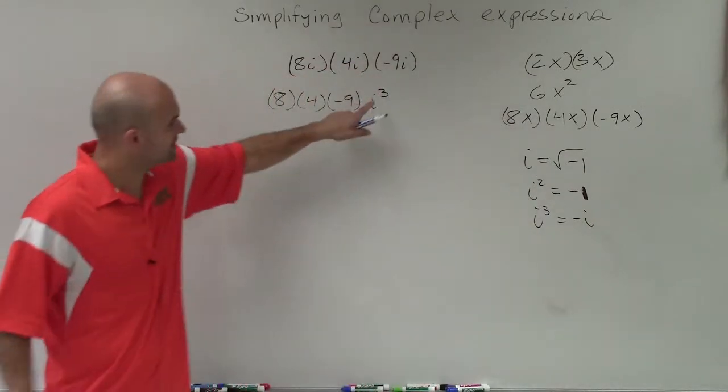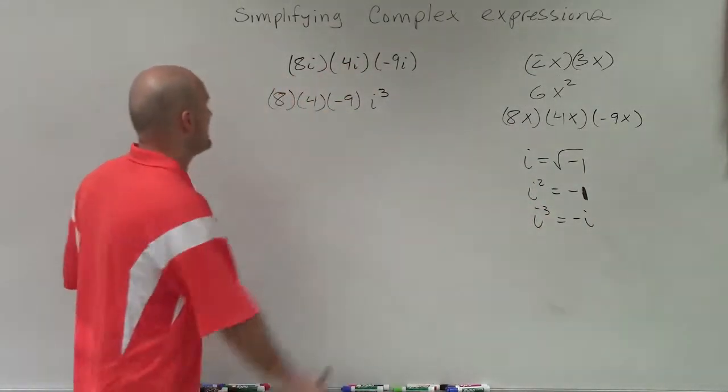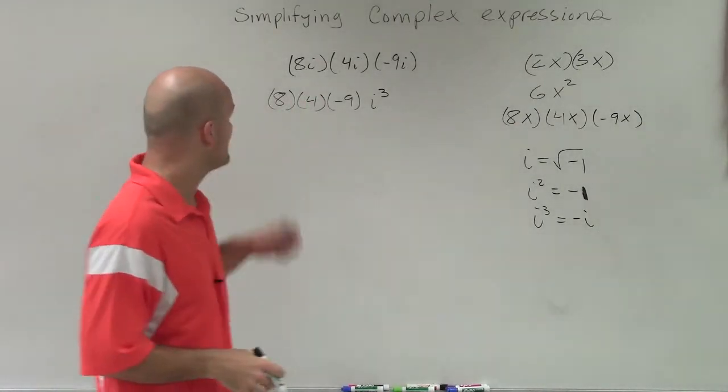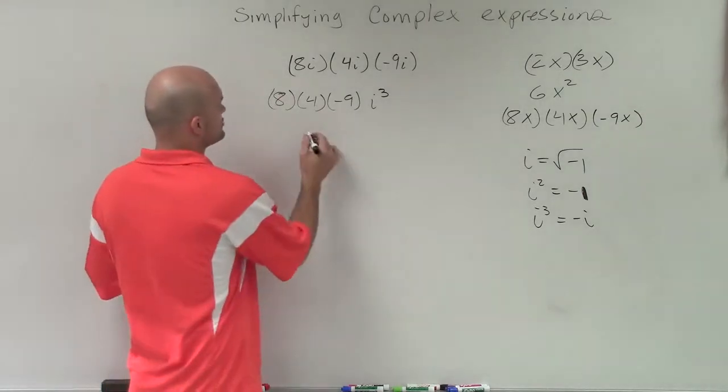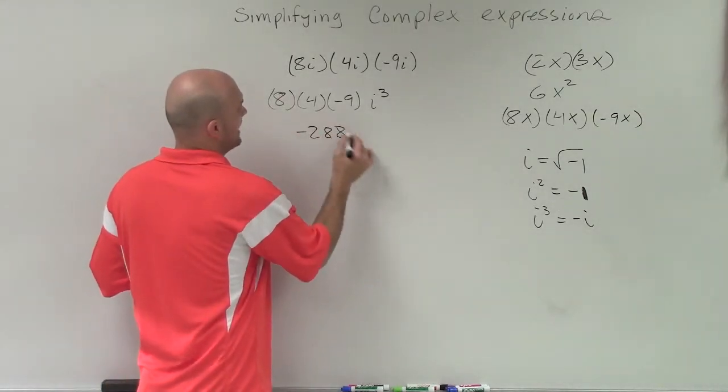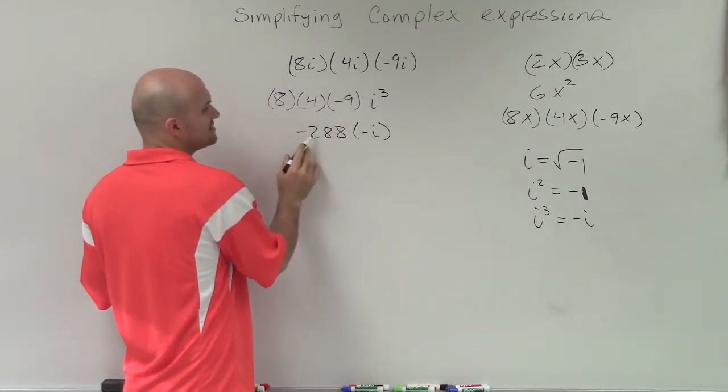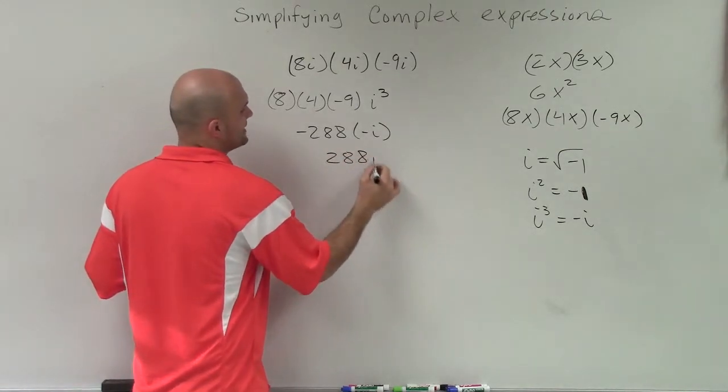So now when we look at this, I can say, all right, I can rewrite then. i cubed is the same thing as negative i. Then I need to do 8 times 4 times negative 9. 8 times 4 is going to be 32. 32 times negative 9 is going to be a negative 288 times negative i. A negative i times negative 288 is going to be a positive 288i.